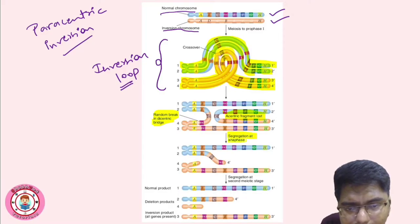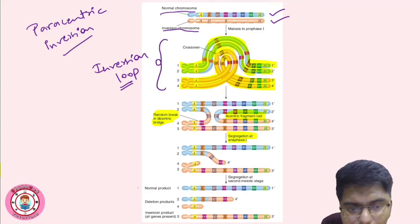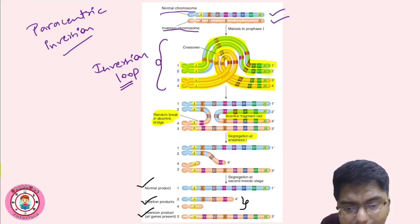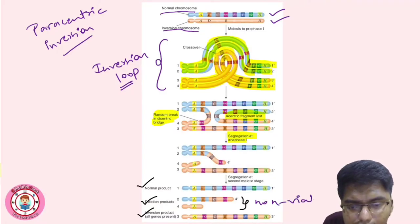During segregation in anaphase, there is a random break in the dicentric bridge. One product is normal — it has everything intact. Two products show deletions: instead of A B C D E F G H, one has only A B C D, and the fourth has only A — the entire segment is deleted, making these non-viable. The third product has all genes present, just in inverted order: A D C B instead of A B C D, with E F G H remaining.